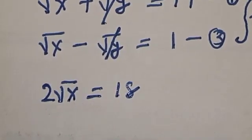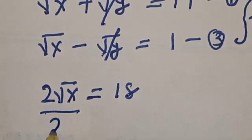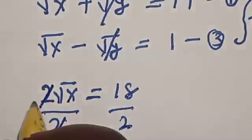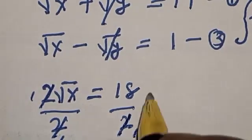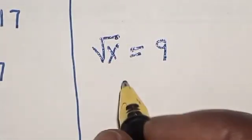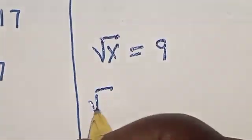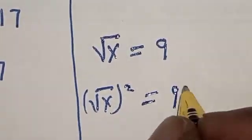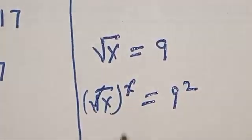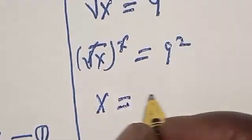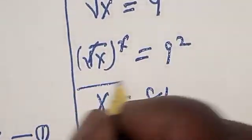Now let's divide both sides by 2. This gives us root of x equals 9. Let's square both sides: root of x squared equals 9 squared. This cancels, so x is equal to 81. That is the value of x.